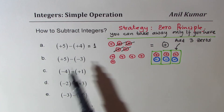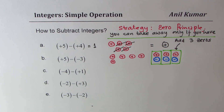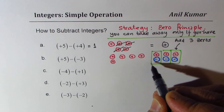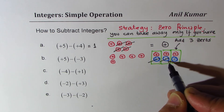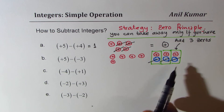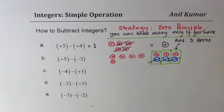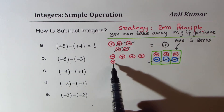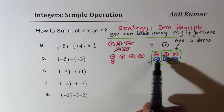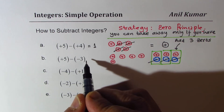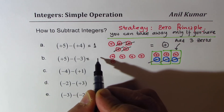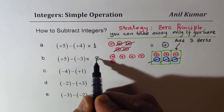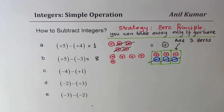We have to take away minus 3, so we could take away these negatives. Now we can take away minus 3. Once you do that, what is left? 1, 2, 3, 4, 5, 6, 7, 8 — we are left with 8 positive numbers. So I am writing positive 8 just as 8, no sign.